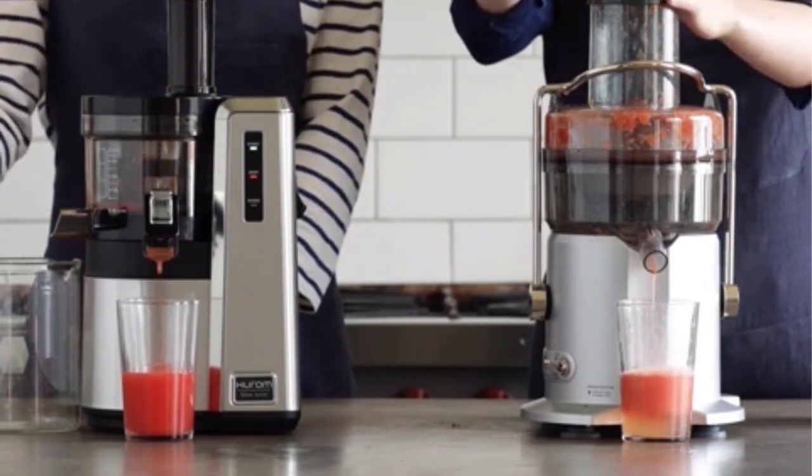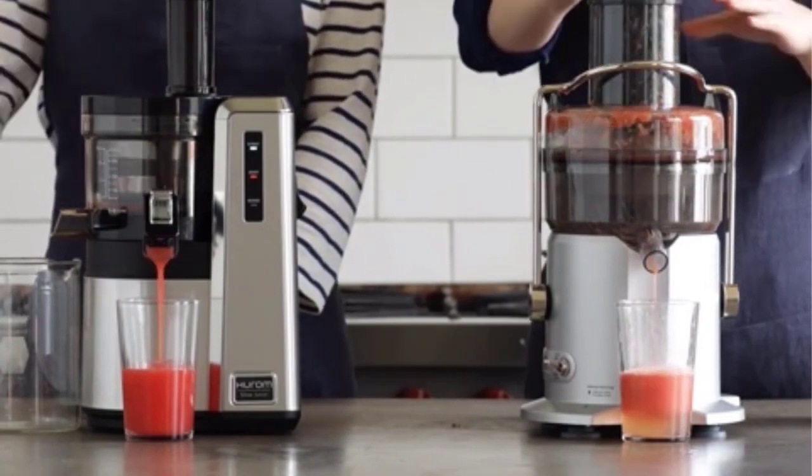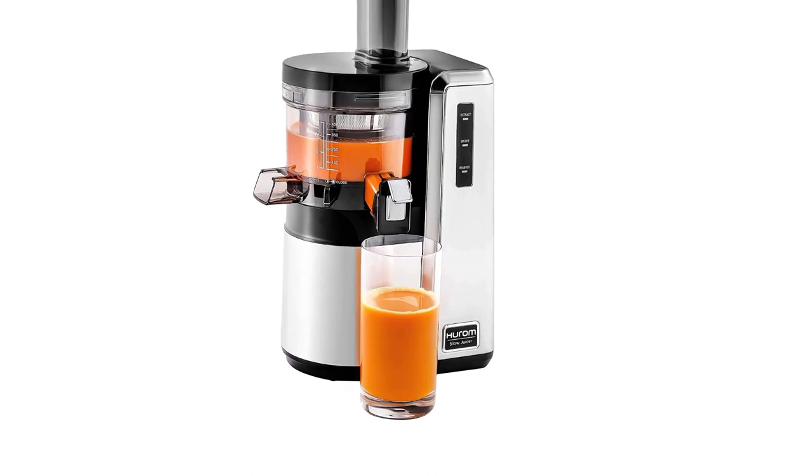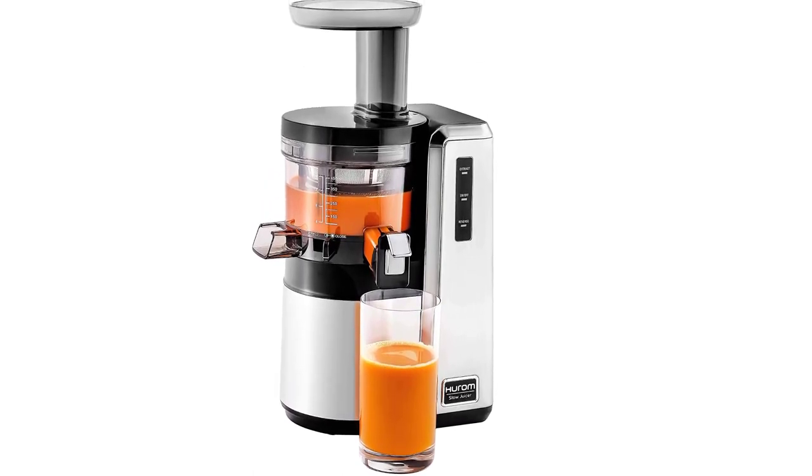The Hurom HZ Slow Juicer has been designed to extract as many nutrients from your fruits and vegetables, without having to stop juicing. The innovative low-speed technology uses a patented design that allows you the option of continuous operation.